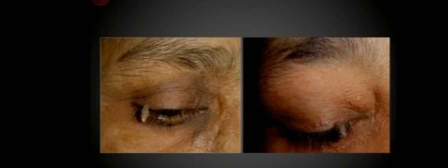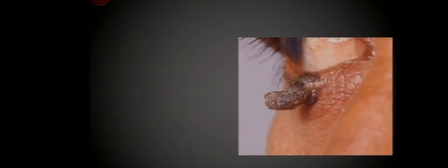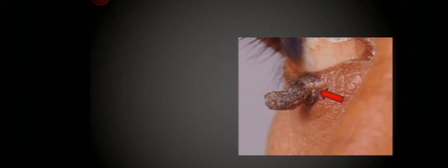We frequently see keratin horns and small squamous papillomas in the skin of elderly patients. But consider a lesion that also looks like a keratin horn with a lot of dead material — how is it different? It is pigmented, and more importantly, look at the base: it has a base which should not be there in a keratin horn. The keratin horn should arise directly from the skin, and there is a slight pulling of the eyelid, a cicatricial change with tethering of the eyelid skin. So this is definitely not a normal keratin horn.